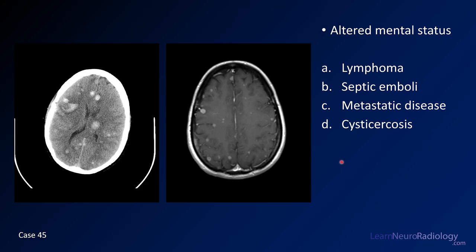Case number 45 is a patient with altered mental status. You have images from a CT and a post-contrast MR. Your choices are lymphoma, septic emboli, metastatic disease, or cysticercosis.